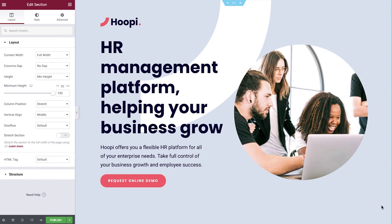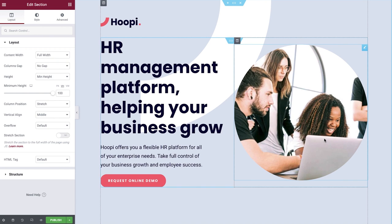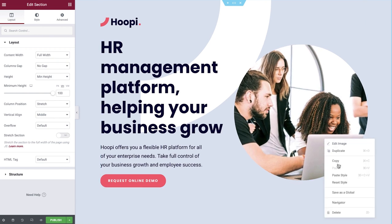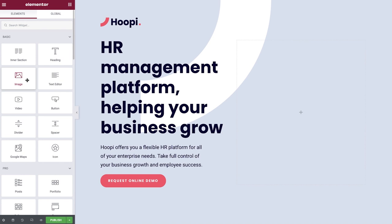For our tutorial, we'll use this HR company landing page template, which I've downloaded from the Elementor library. We'll recreate this circular image, complete with an eye-catching hover effect. We'll start first by deleting the existing image widget so we can recreate it from scratch. From the Widget panel, select the image widget and drag it into the right column. The blue line indicates where it will be positioned when you let go.